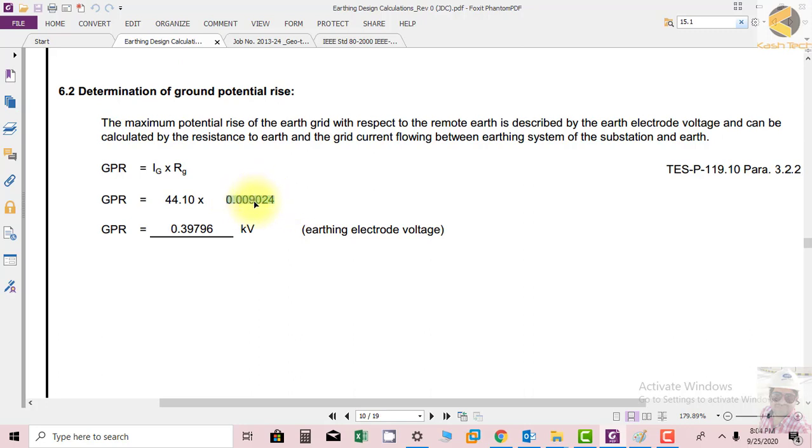Then we have ground potential rise by this simple formula, coming to 0.39796 kV, and this is called the earthing electrode voltage. This term is used.